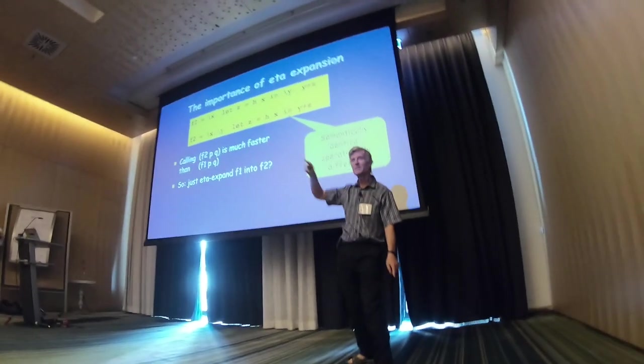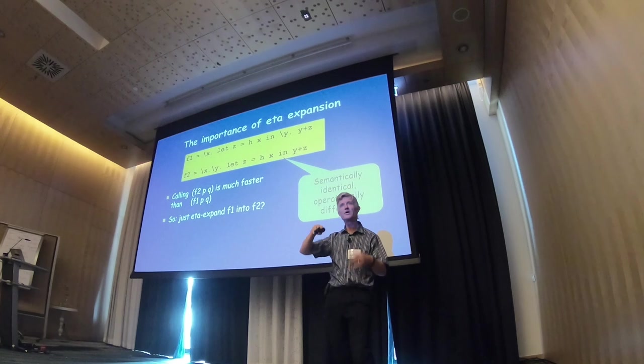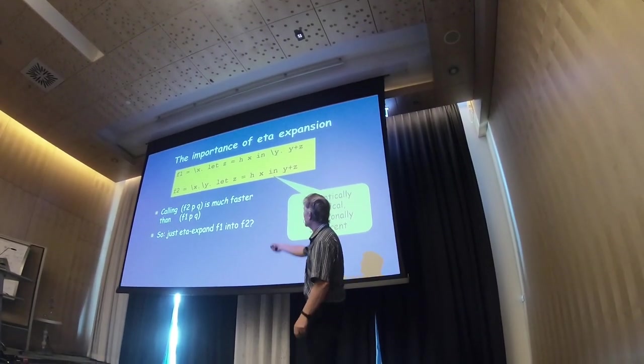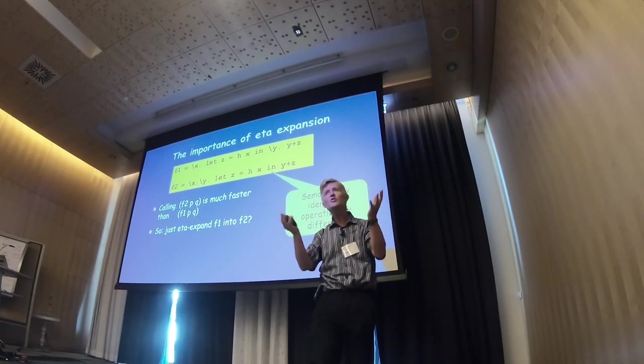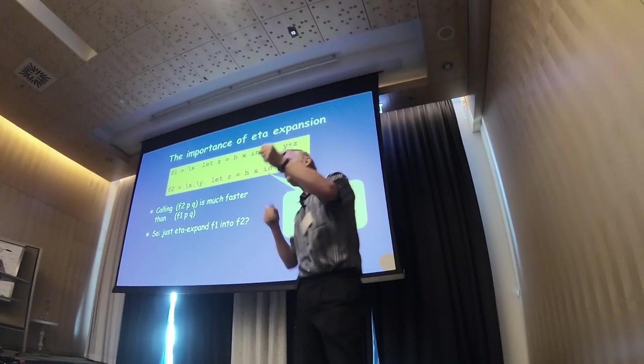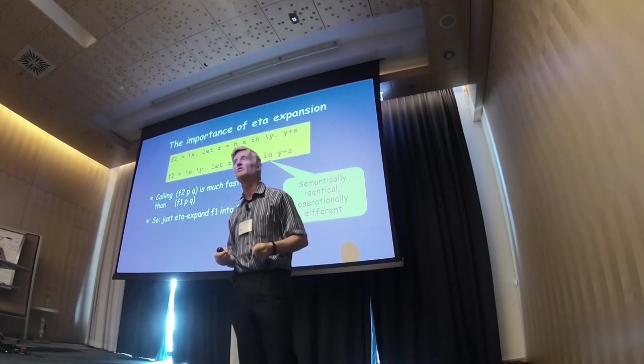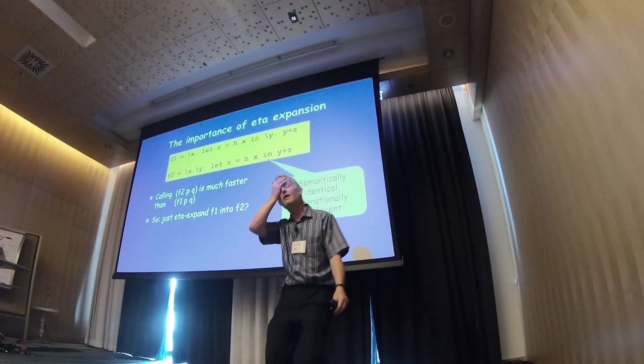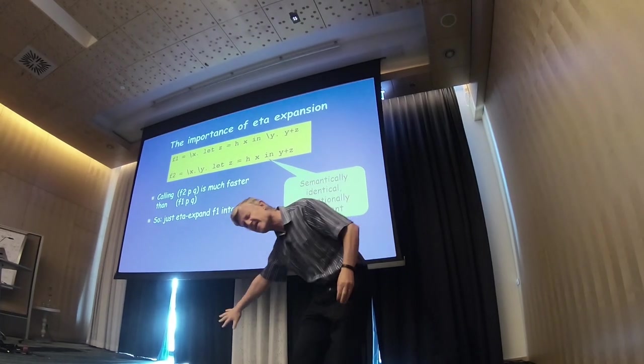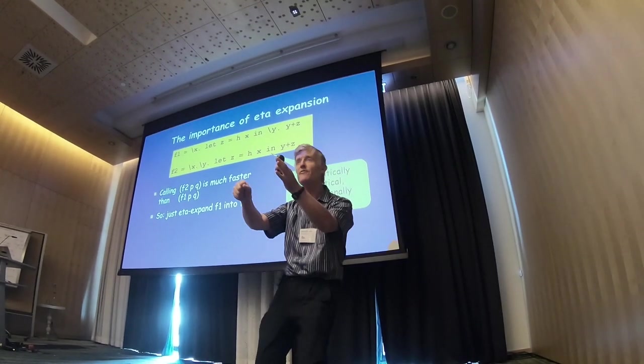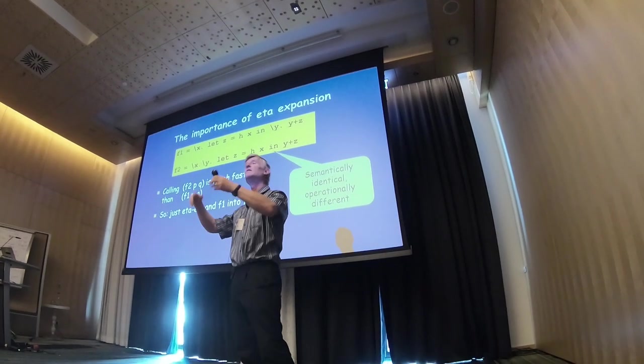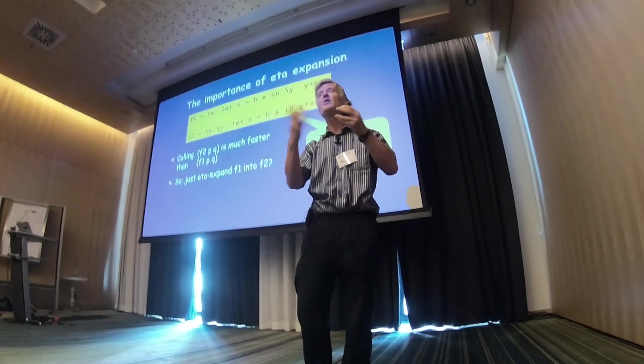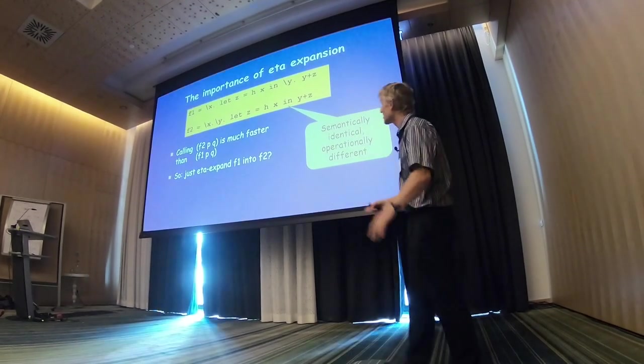These two functions, F1 and F2, they kind of mean the same thing, but they behave operationally very differently. If you call F2 on two arguments, you can slam the two arguments in registers and jump to some code, and all is good. Fast things happen. If you call F1 with two arguments, you have to put one argument in a register, keep the second argument on the side, jump to F1, which will crank away and return a heap-allocated function closure, which you then have to call passing the second argument. And so, this is much slower.